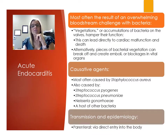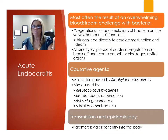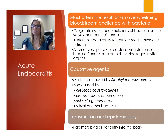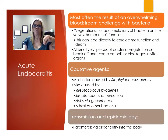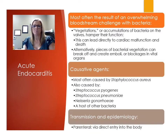Acute endocarditis is usually caused by Staphylococcus aureus, but Streptococcus pyogenes, Streptococcus pneumoniae, Neisseria gonorrhea, and other bacteria can also be involved. This is a parenteral route — direct entry into the body via IV or surgery. IV drug users and subcutaneous drug users have a higher risk. Traumatic injuries and surgical procedures can also introduce large numbers of bacteria. Treatment is gentamicin along with vancomycin, and this is seen three times more often in males than females.